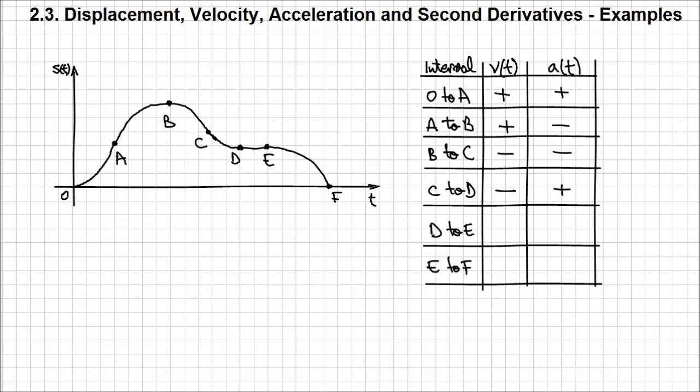Now between D and E, we have a particular situation. At both points D and E, the slope of the tangent is 0. For the entire interval, the slope is maintained at 0, so we're going to put 0 for both velocity and acceleration because it doesn't change for the entire interval.